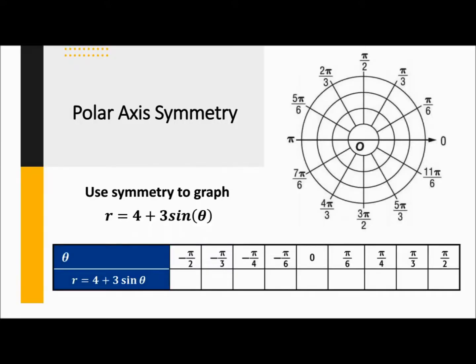Looking at this, we're going to use symmetry again for 4 plus 3 sine of θ. In this case, sine is going to be symmetric to the vertical line through π/2. So if I drew this line, it's going to be symmetric here — if I can find all the points over here, it would flip them over, or any points over here would flip over that way as well.